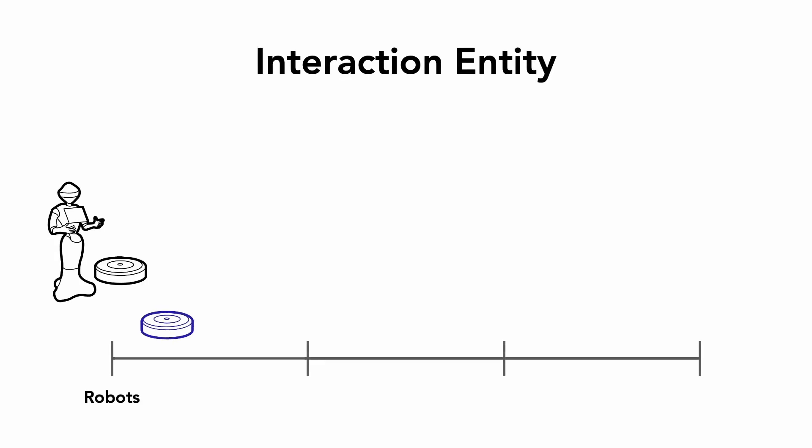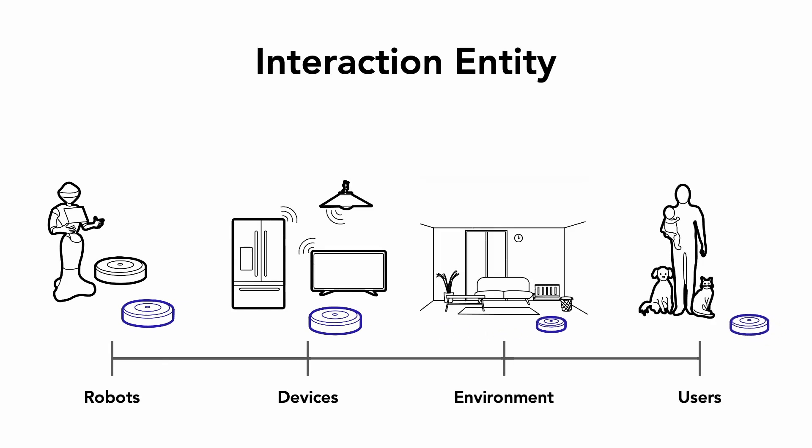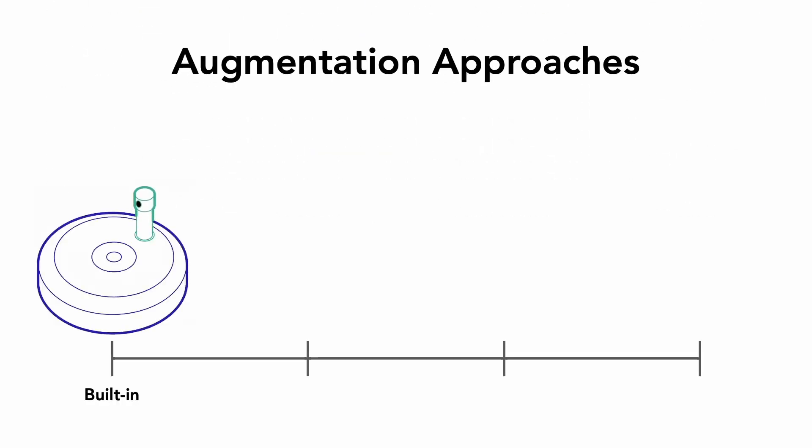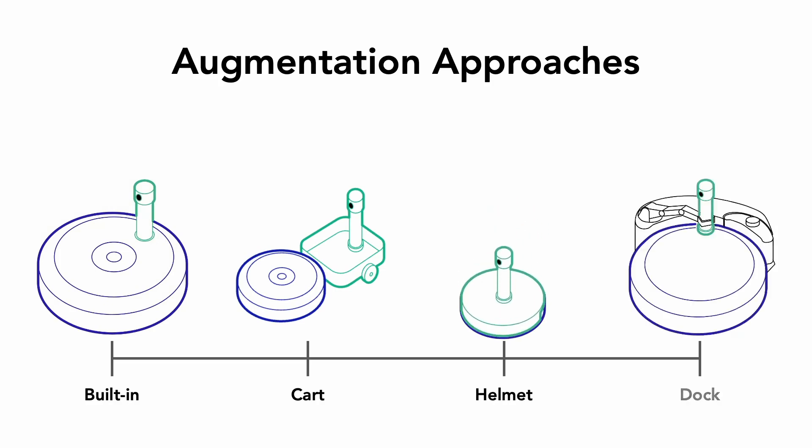For instance, in the interaction entity dimension, we explore how robots engage with other robots, smart devices, environments, and users. In the augmentation approaches dimension, we identify methods to enhance versatility, such as built-in units and attachable carts.